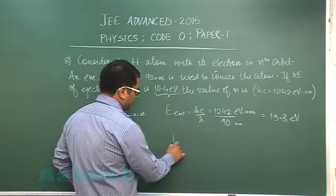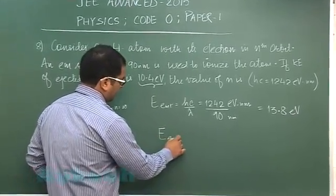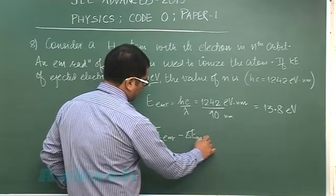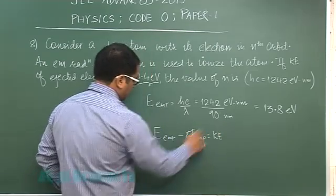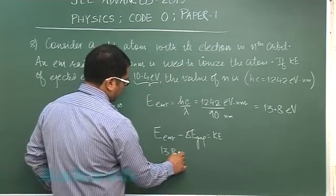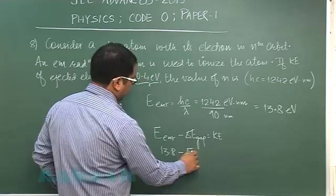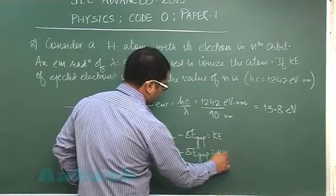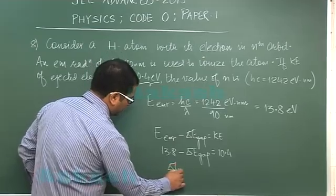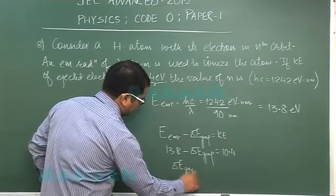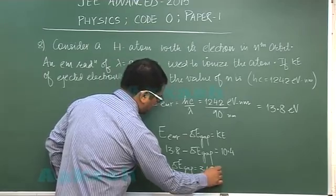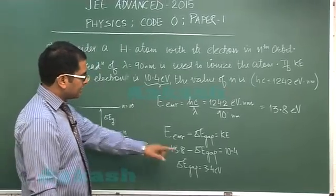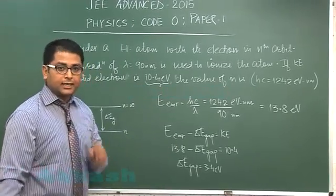So what has happened? The energy of the electromagnetic radiation minus the energy gap would go in the form of kinetic energy, and that's 13.8 minus the energy gap. And the kinetic energy comes out to be 10.4, all in electron volts. So from here we get the energy gap comes out to be 3.4 electron volts, which is a clear indication that the initial energy level is 3.4 electron volts in negative.